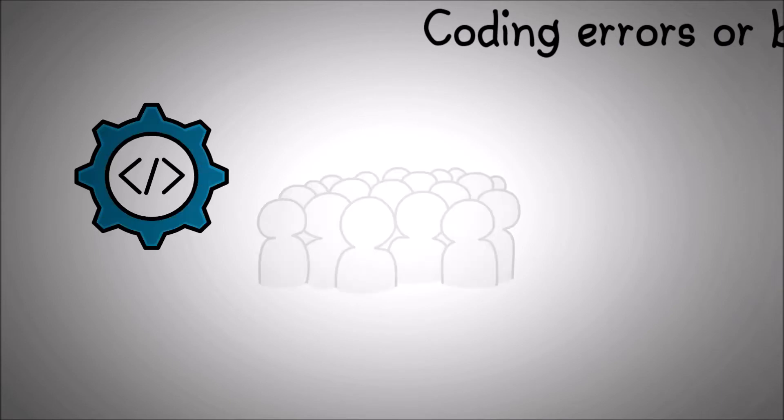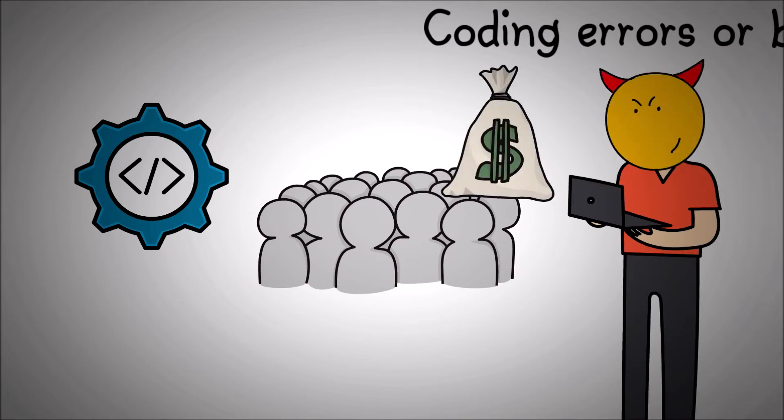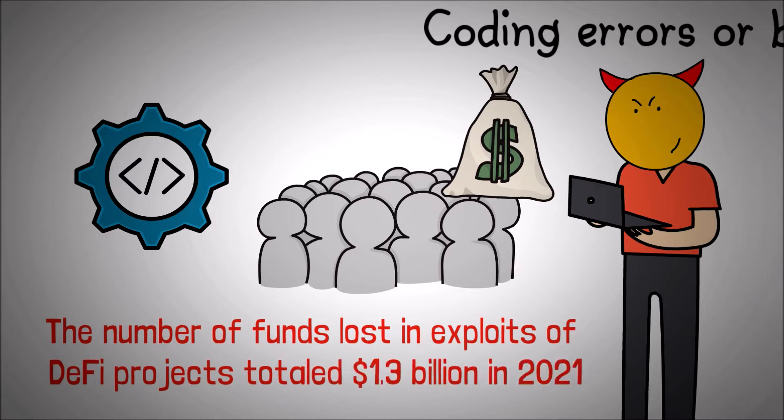DeFi runs on pieces of code visible to everyone, which means that technologically savvy people may exploit vulnerabilities in the code and run away with huge sums of money. As per one estimate, the number of funds lost in exploits of DeFi projects totaled $1.3 billion in 2021.